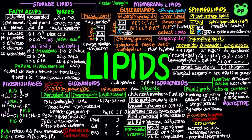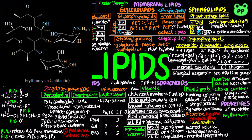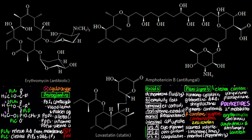The last major class of lipids are polyketides, which are secondary metabolites — compounds not central to an organism's metabolism but serving subsidiary functions that give their producers an advantage in some ecological niche. Examples of polyketides include the antibiotic erythromycin, the antifungal amphotericin B, and the cholesterol synthesis inhibitor lovastatin.